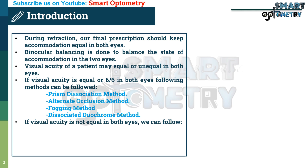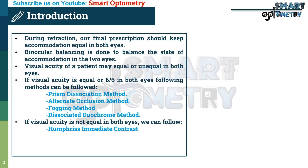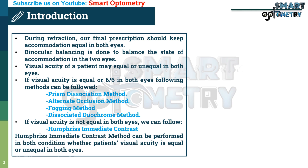If visual acuity is not equal in both eyes, we can follow Humphrey's immediate contrast method. Humphrey's immediate contrast method can be performed in both conditions, whether the patient's visual acuity is equal or unequal in both eyes.